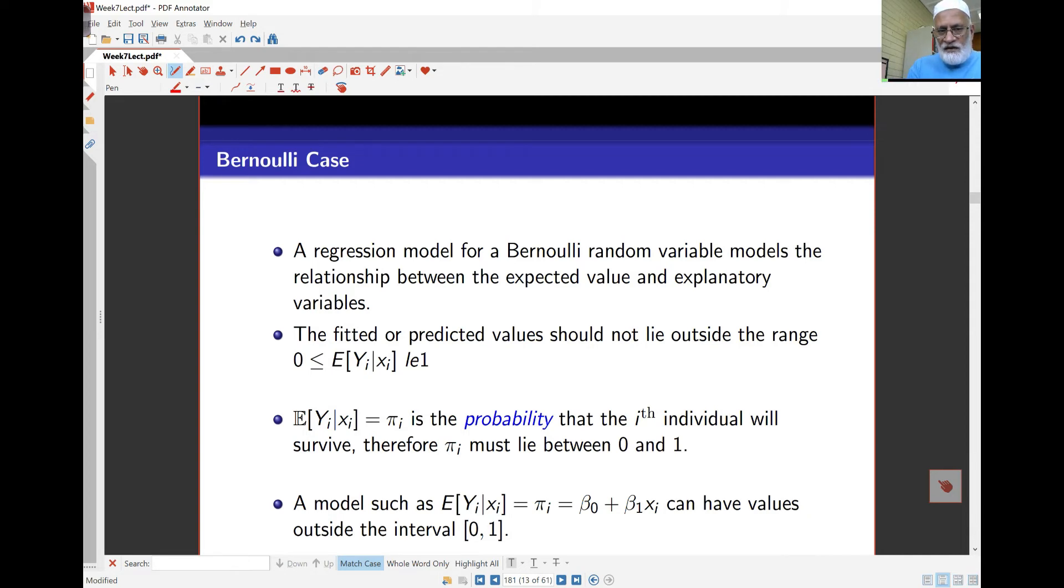That's not the case with Bernoulli regression. With Bernoulli regression, the probabilities need to lie between 0 and 1. Here in the regression case, when I'm looking at the mean value of yi, I know the mean is just πi, the probability, which needs to lie between 0 and 1. That's not the case if I use linear regression based on normal data, because there the expected values can be negative or positive.